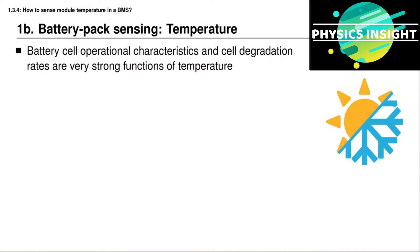In this lesson you will learn how a battery management system measures temperature. The operational characteristics of battery cells depend very strongly on temperature. For example, the electrical resistance of a battery cell is often quite low at warm temperatures and quite high at cold temperatures, and this means we can get more power out of the battery cell at warm temperatures. So the BMS needs to know the temperatures of its cells in order to compute power limits and accurately compute estimates of state of charge and state of health.